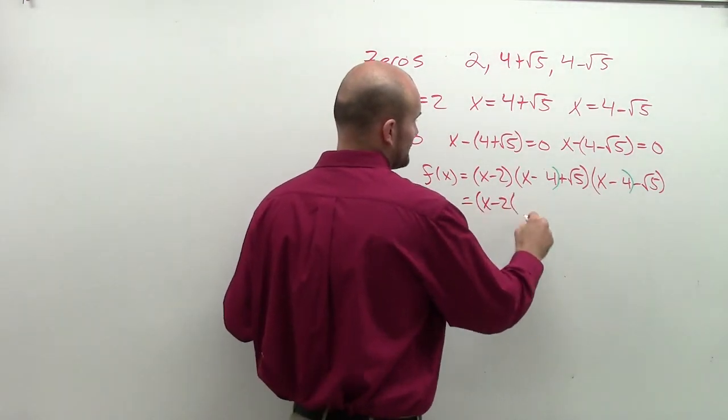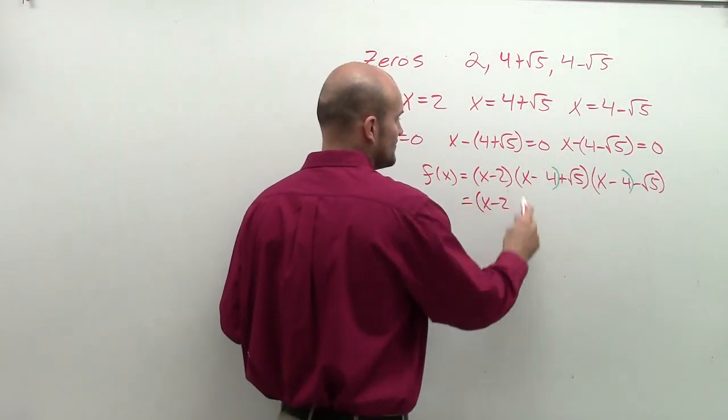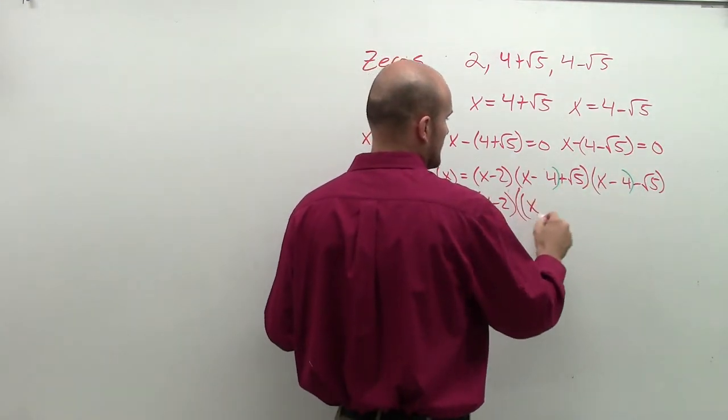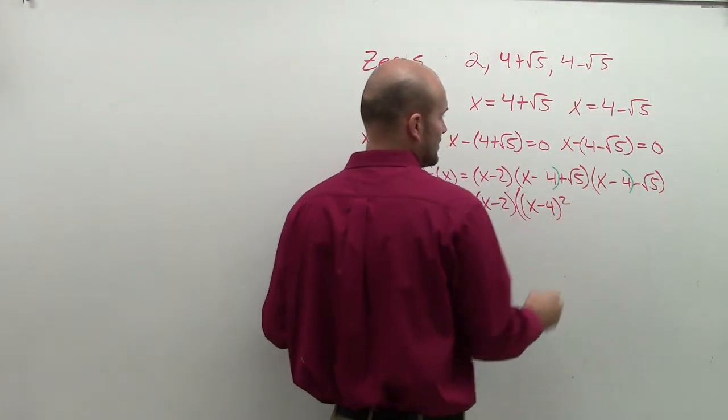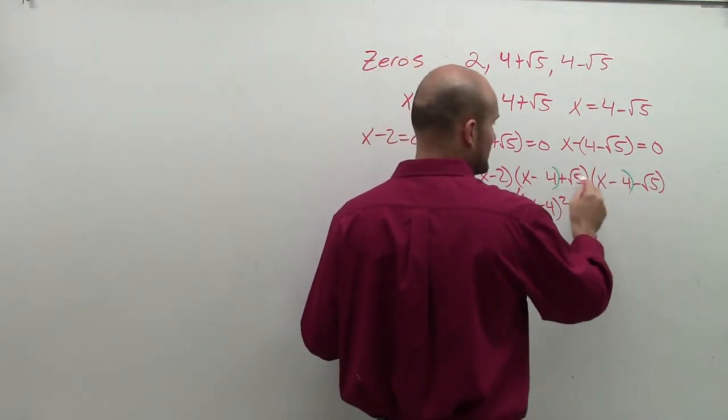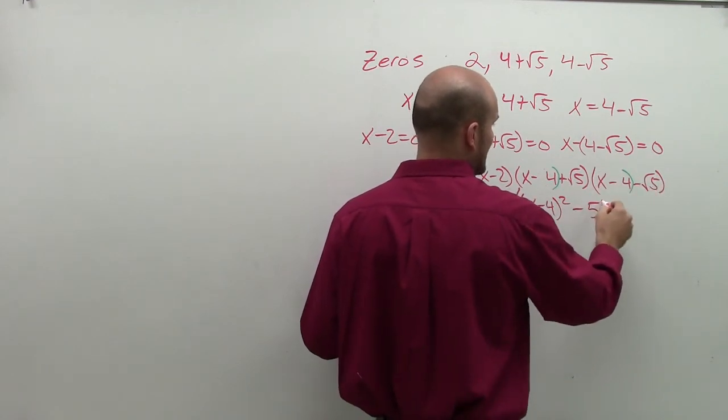I have x minus 2, that's the other parentheses, times x minus 4 times x minus 4 is x minus 4 squared. Square root of 5 times square root of 5 is negative, or square root of 5 times negative square root of 5 is negative 5.